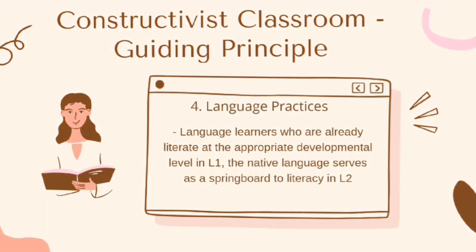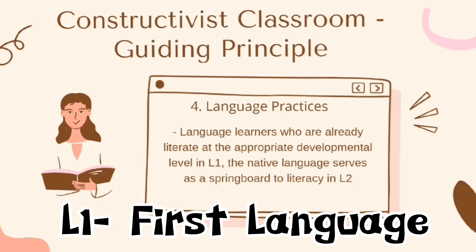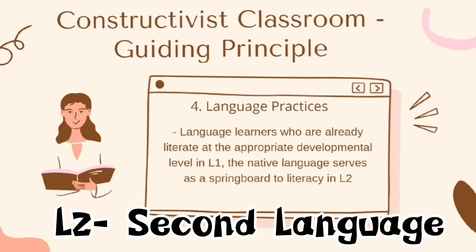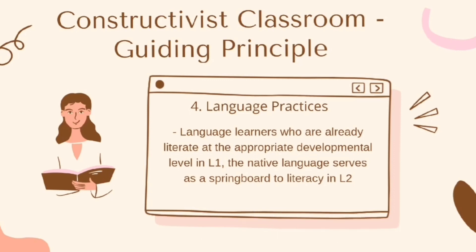The last guiding principle is language practices. Language learners who are already literate at the appropriate developmental level in Language 1 — the native language — use it as a springboard to literacy in Language 2. Students already understand letter-sound relationships, that meanings come from the printed page, and have developed strategies that transfer over to literacy in L2. Building quality communication using bilingualism could open opportunities for more communicators.